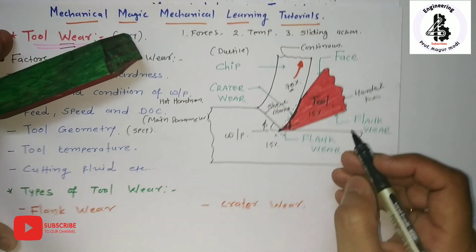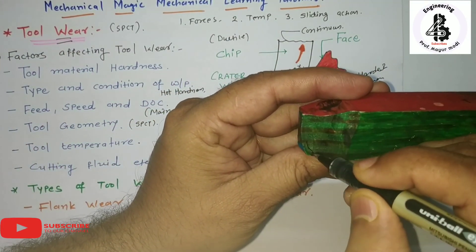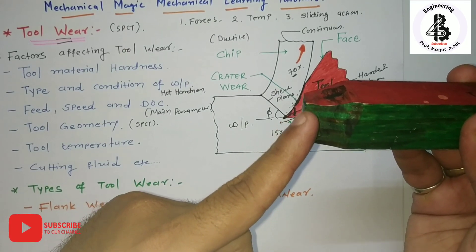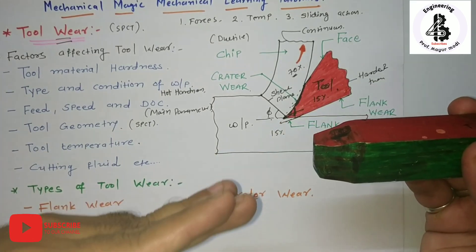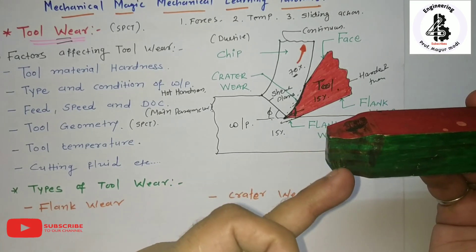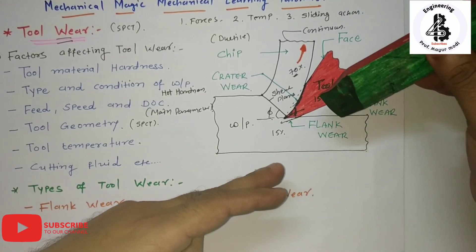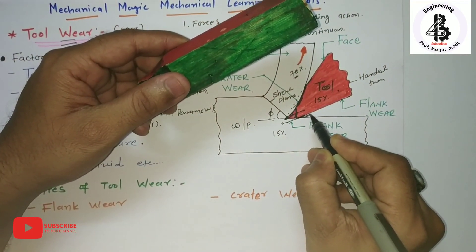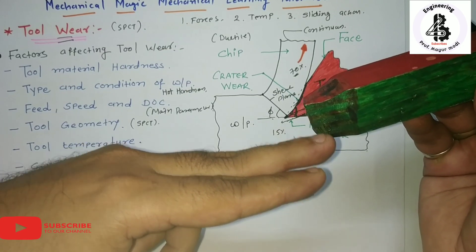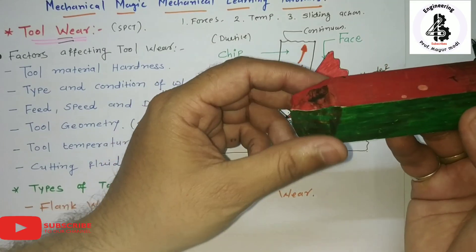The second type of wear is flank wear. Flank wear occurs due to abrasion by hard particles between the tool and workpiece material. Some hard particles separate out and cause shearing of micro-grooves between the tool and workpiece. The abrasion of fragments of the built-up edge blows against the clearance face of the tool. These hard particles pass along the flank side and create wear on the flank, which is called flank wear.